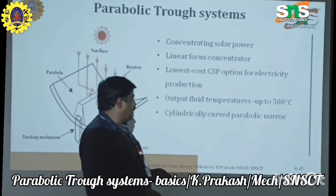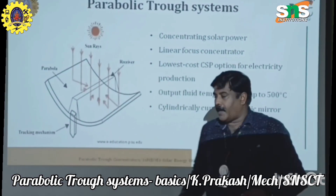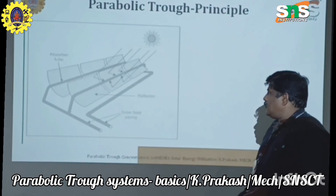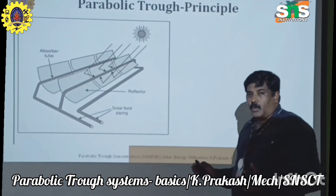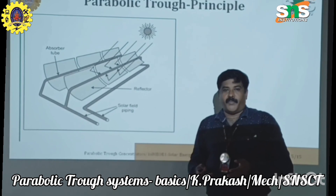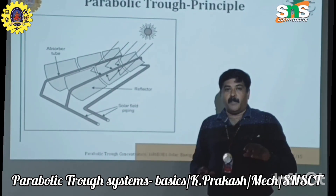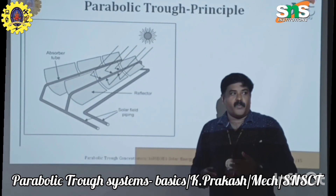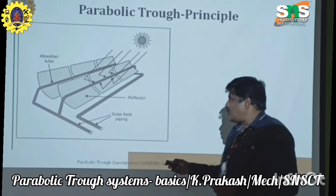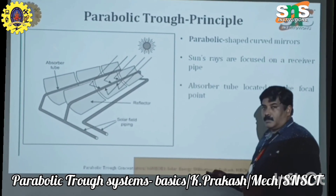This system operates at around 500 degrees Celsius, and it is curved like a parabolic structure. The amount of solar radiation falling on the surface needs to be utilized efficiently, and this is made possible with the help of this parabolic trough principle.